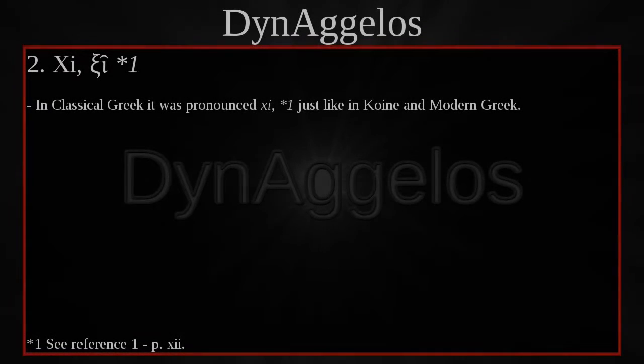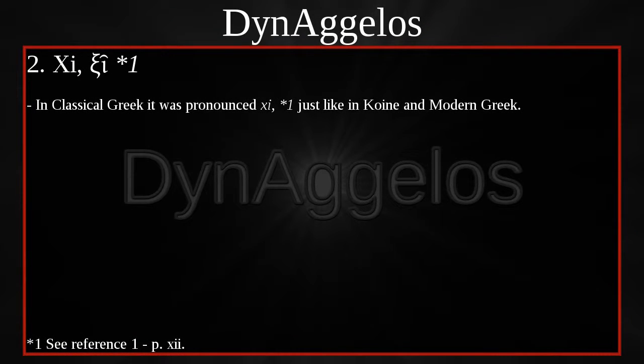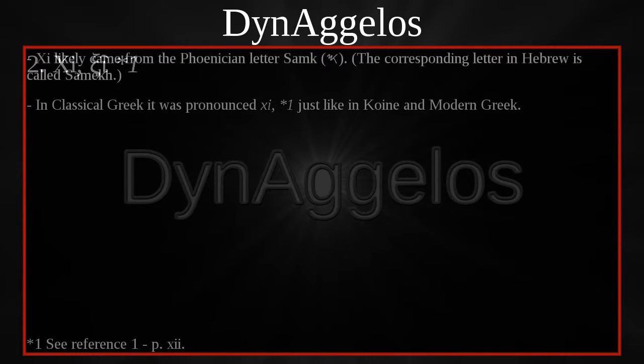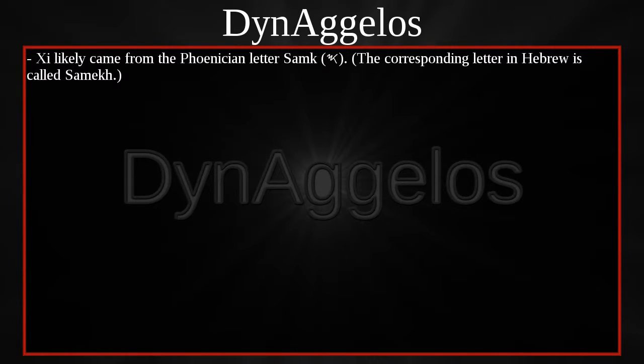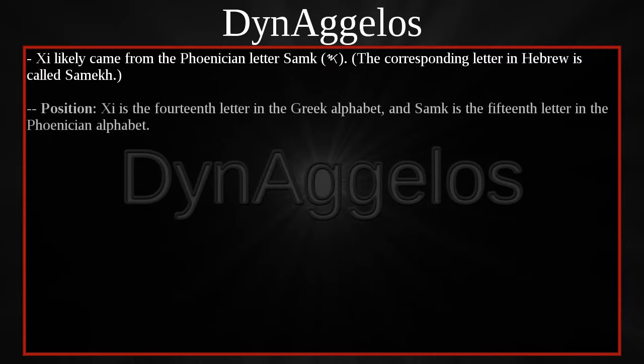Hello everyone, you are watching The Greek Alphabet: Pronunciation and a Brief History, Part 2. XI — in classical Greek it was pronounced XI, just like in Koine and modern Greek. XI likely came from the Phoenician letter. XI is the 14th letter in the Greek alphabet, and XI is the 15th letter in the Phoenician alphabet.